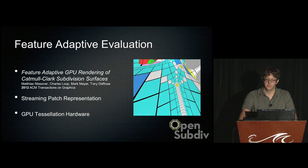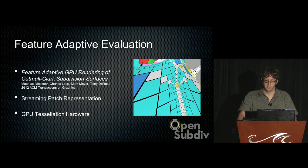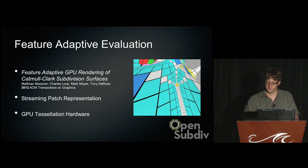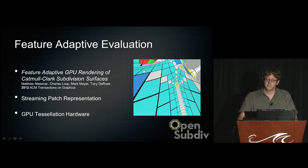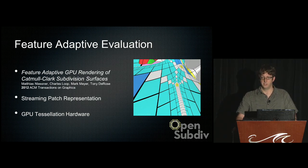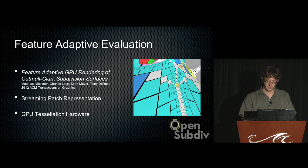Feature-adaptive evaluation is the new feature introduced with Release 1.0. Instead of uniformly subdividing the entire surface, we look for individual locations where we want to add more detail. We'll subdivide more around creases and extraordinary vertices, but not in flatter areas. This allows us to be much more efficient when generating geometry, and lets us utilize GPU tessellation hardware and streaming memory to use much less GPU memory.